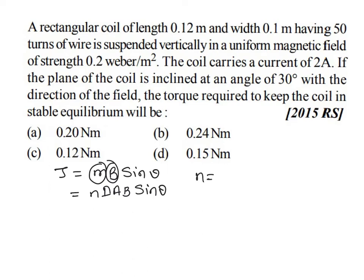The number of turns is 50, the current is 2 ampere, and the area is length into width — 0.12 meter into 0.1 meter. Now we need to find θ. The plane of the coil is inclined at 30 degrees with the direction of the field.